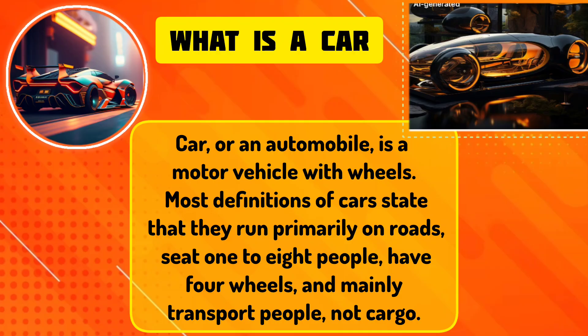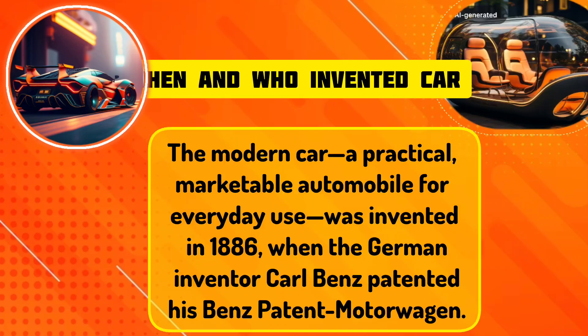What is a car? A car, or automobile, is a motor vehicle with wheels. Most definitions of cars state that they run primarily on roads, seat one to eight people, have four wheels, and mainly carry people, not cargo.